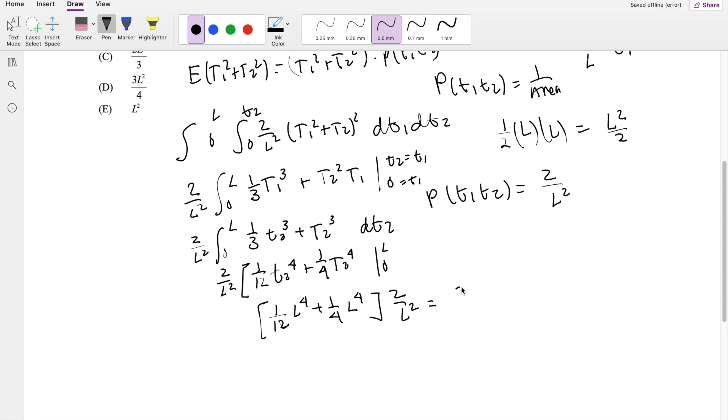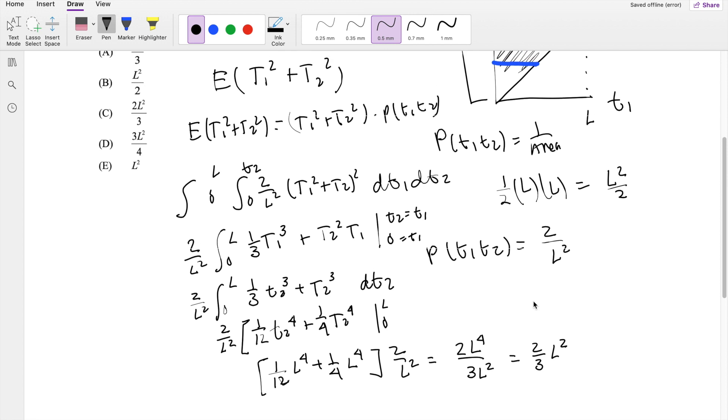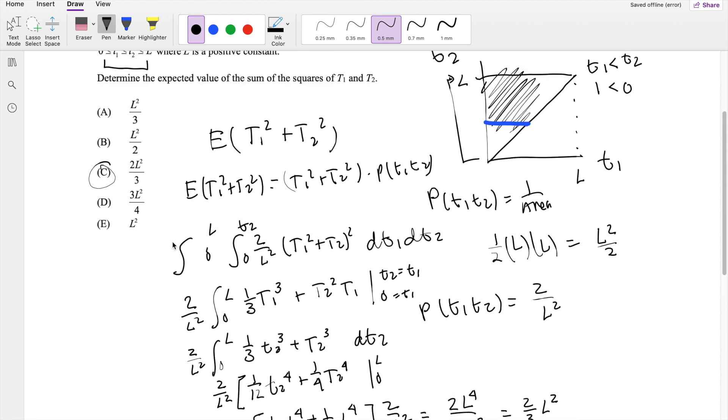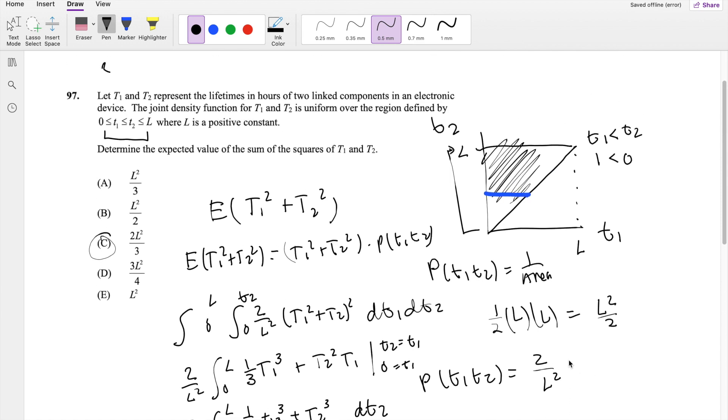So this is equal to 2 over L fourth, over 3 L squared. So then this is equal to 2 thirds times L squared, which is our answer C. If you guys have any questions, feel free to leave them down below. Otherwise, as always, make sure you like, subscribe, and share. Bye!